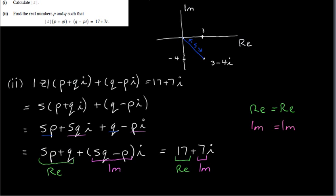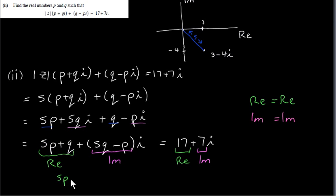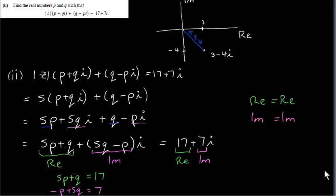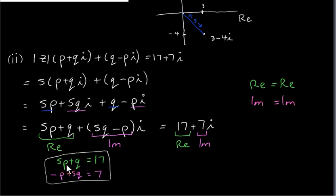So I'll equate the real parts: 5p plus q equals 17. Then I equate the imaginary parts. The imaginary part on the left is 5q minus p, which I'll write as minus p plus 5q, to line up the p's in both equations. The imaginary part on the right is 7, giving minus p plus 5q equals 7. The easiest thing to do is multiply the bottom equation by 5, giving minus 5p plus 25q equals 35.